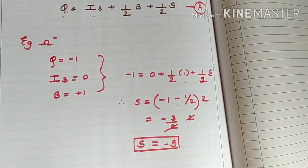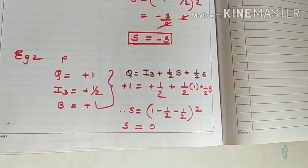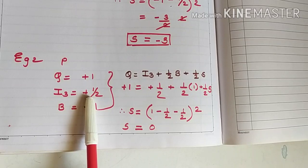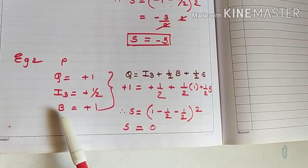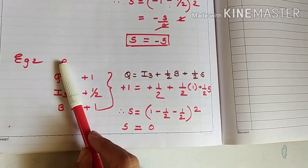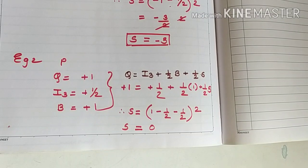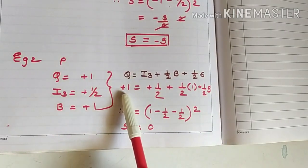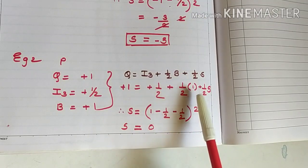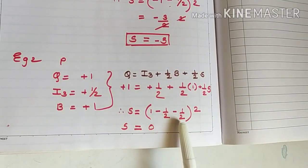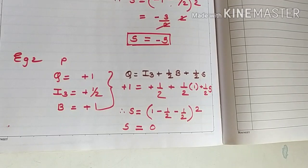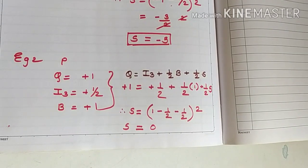Let's solve for the proton next. The charge on a proton is positive one. I3 for the proton is plus half, as derived previously. Since the proton is a nucleon under the baryon branch, baryon number equals plus one. Putting these values into the Gell-Mann Nishijima relation — Q equals plus one, I3 equals plus half, B equals one — we solve and get S equal to zero. So the proton is a non-strange particle.